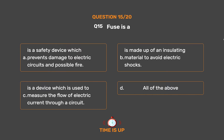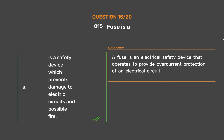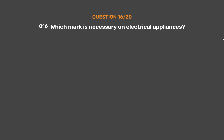The correct answer is Option A: A fuse is a safety device which prevents damage to electric circuits and possible fire. A fuse is an electrical safety device that operates to provide overcurrent protection of an electrical circuit.